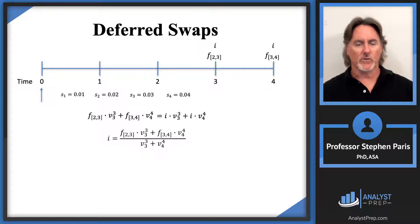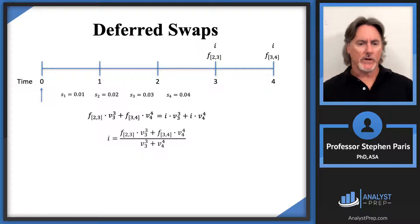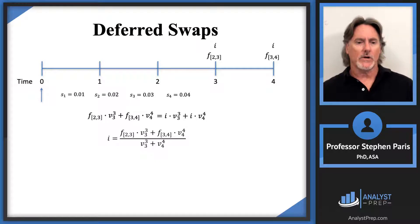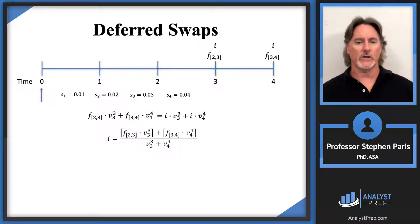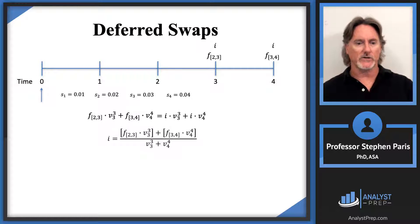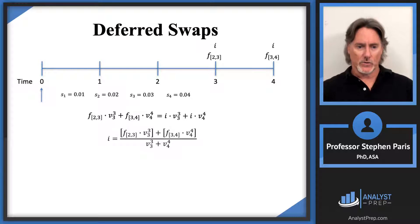At this point, since all spot rates are listed, you could numerically calculate the forward rates and go through the computation. But if you take a moment to do a symbolic computation first, you can simplify the numeric work. Looking at the numerator — putting brackets around each term — I recognize that each term is a forward rate times its appropriate v-factor, i.e., discount factor. From a previous video, the forward rate times the discount factor equals the difference between two corresponding discount factors.